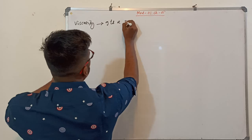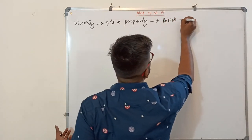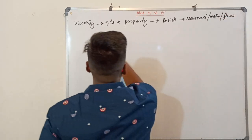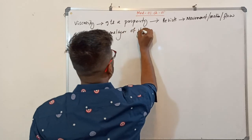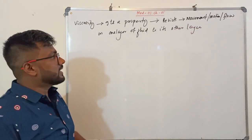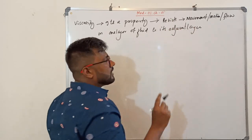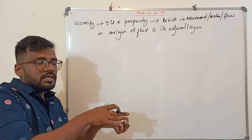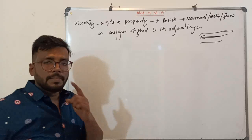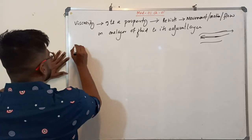Viscosity is a property of fluid. What it does is it resists the movement or motion or flow of one layer of fluid with respect to its other adjacent layer. Viscosity opposes the movement of one layer with respect to its adjacent layer when the fluid is in motion.